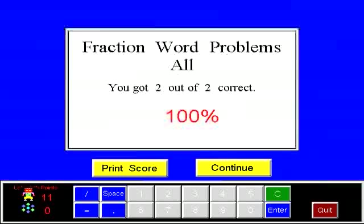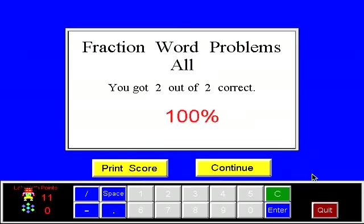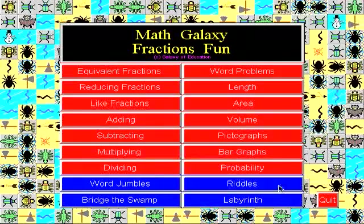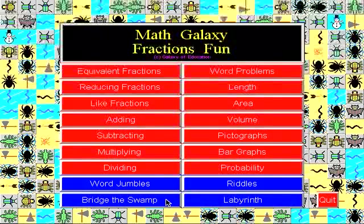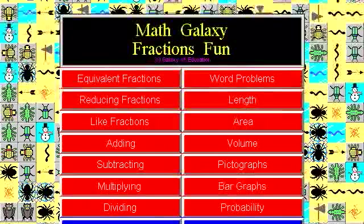The program has two modes: one talks you through problems step by step, the other only asks for a final answer. When you exit final-answer mode you get a score, which you can print. You earn robots for doing problems, usable in a maze game called the Labyrinth. There's also a Riddles game like Wheel of Fortune, Word Jumbles, and a game called Bridge the Swamp. This has been a review of Fraction Word Problems — for more review and practice, go to mathgalaxy.com. Thank you for listening.